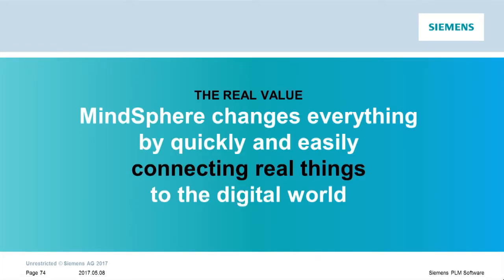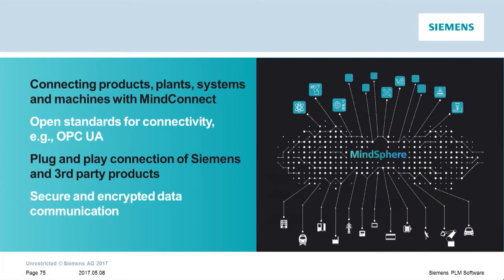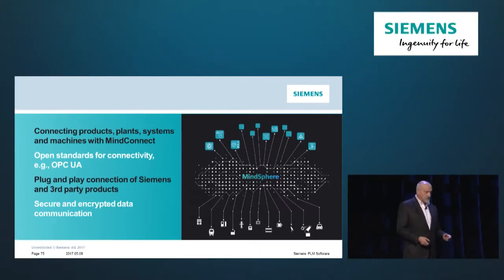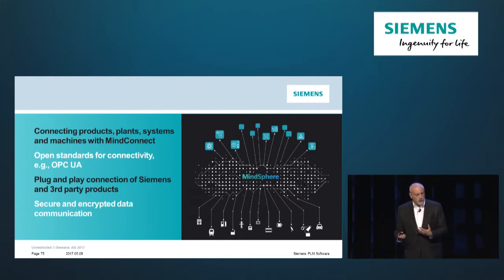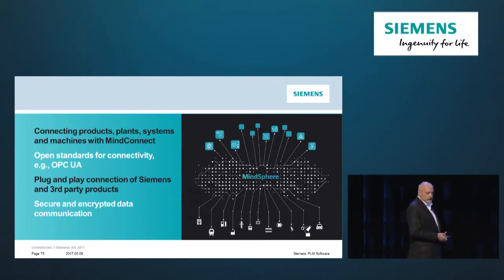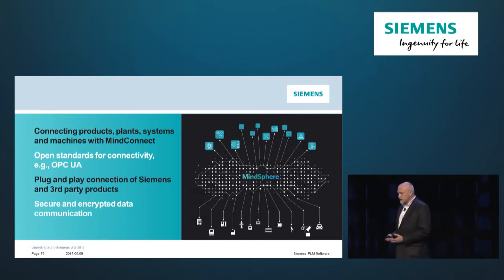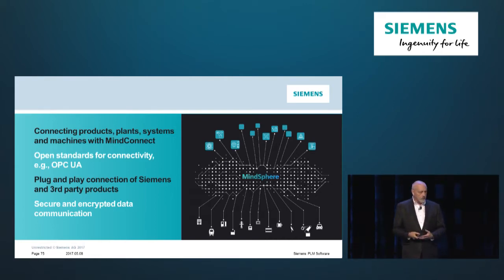The first area is how MindSphere changes everything by quickly and easily connecting real things to the digital world. Starting at the bottom of this diagram, we talk about connectivity — connecting products that were manufactured, connecting plants, systems, and machines. All that can be done with MindConnect, which includes both hardware gateways and software libraries and drivers that can be installed into other devices to allow them to connect directly to MindSphere. We do this through open standards like OPC UA, and MindSphere also speaks the language of Siemens controllers like the Simatic S7 automatically.